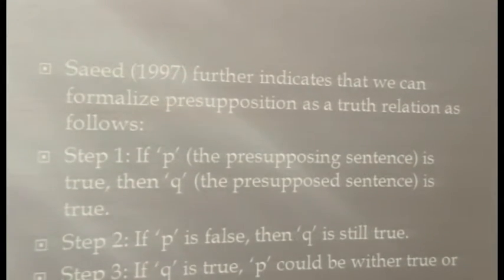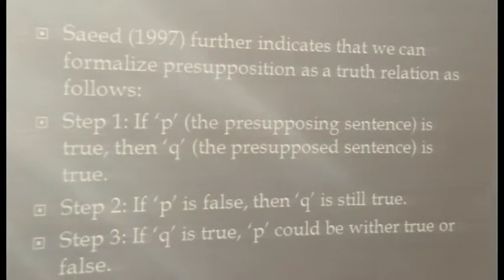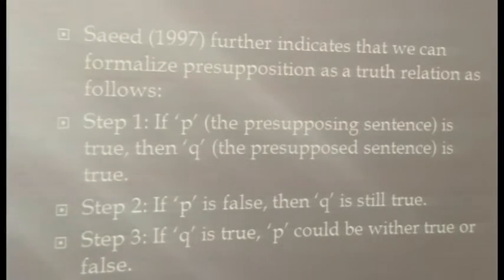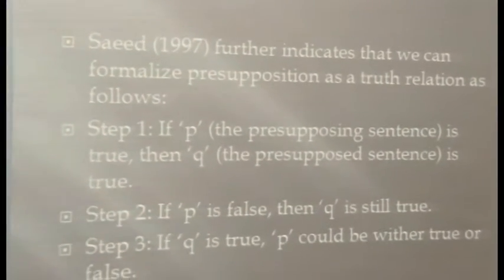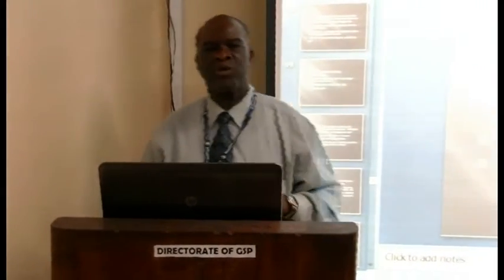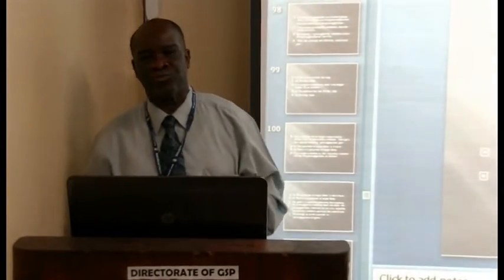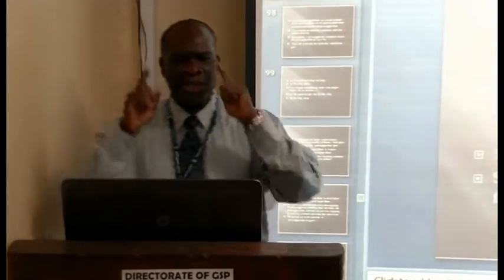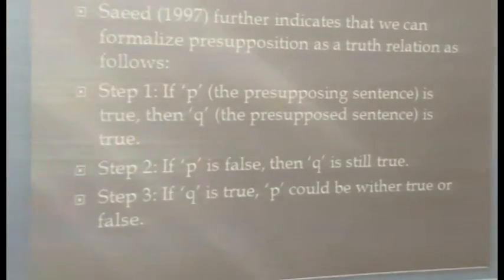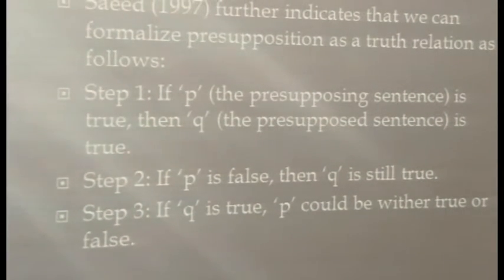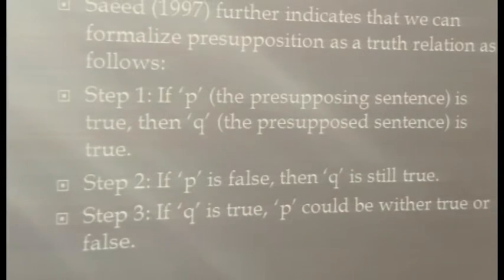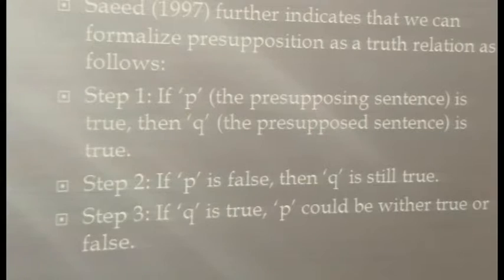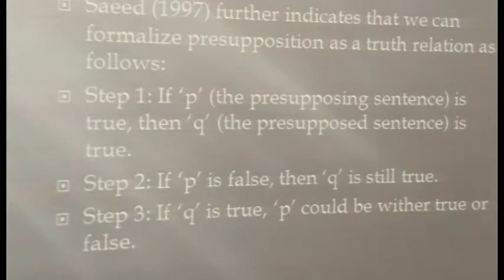Like entailment, we can define presupposition as a truth relation in three steps. Step 1: if P — the presupposing sentence — is true, then Q — the presupposed sentence — is true. Step 2: if P is false, then Q is still true. And the final step: if Q is true, P could be either true or false. Viewing presupposition as a truth relation allows us to capture an important difference between entailment and presupposition.